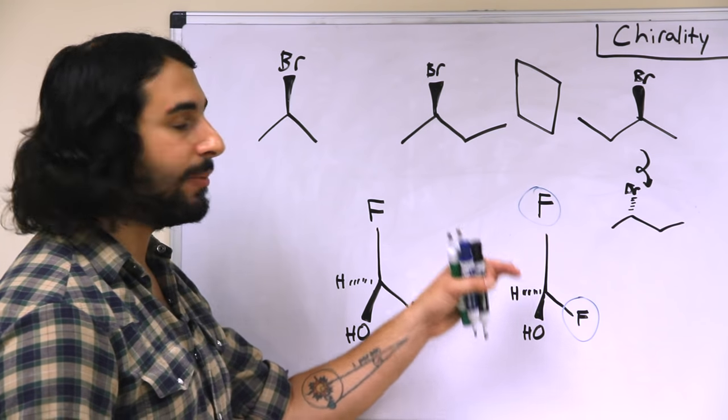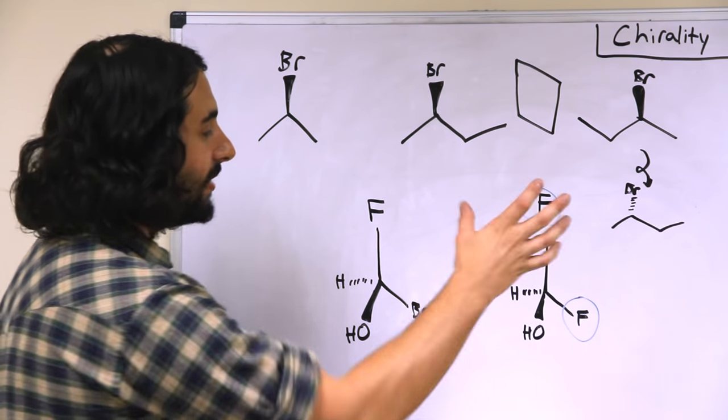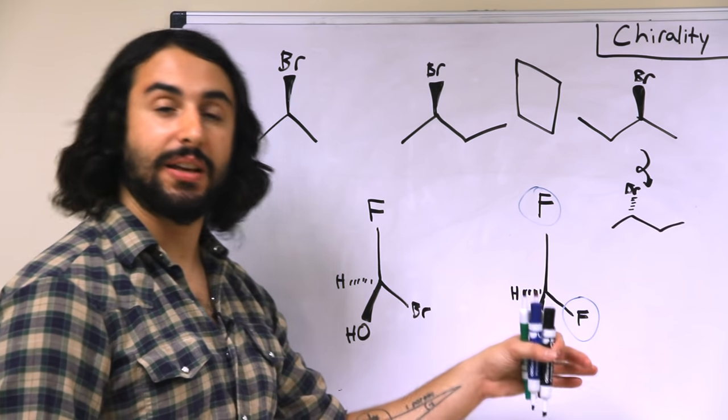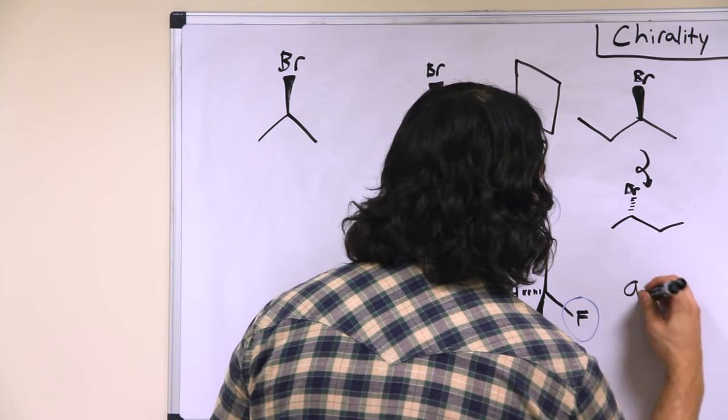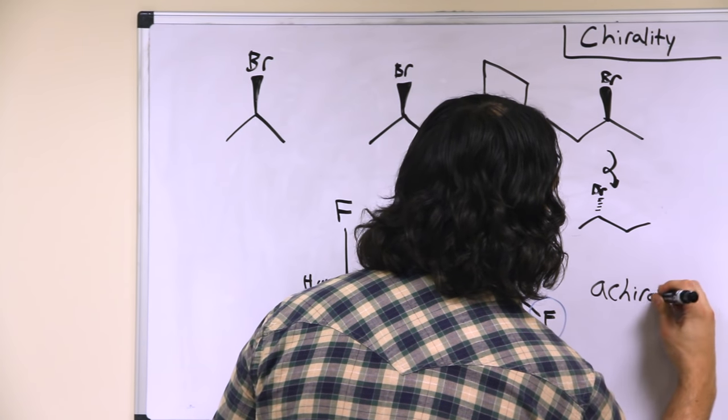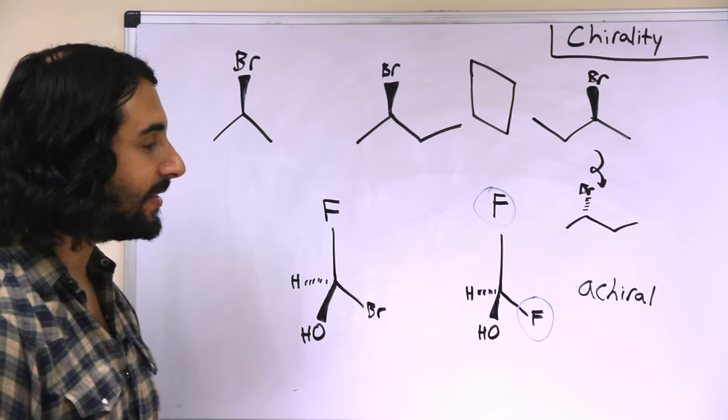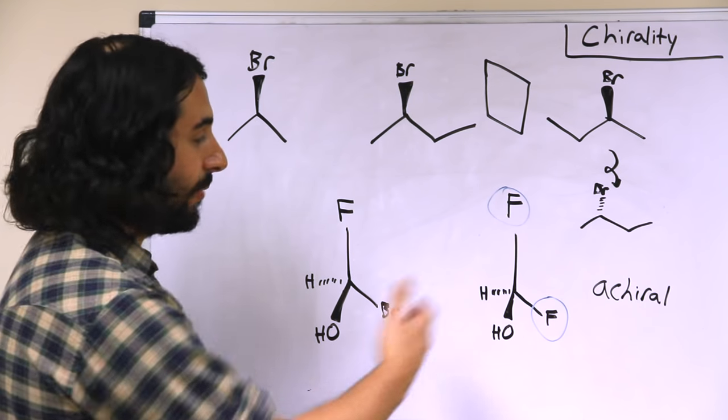However, this one over here, having two identical fluorine atoms, if you drew the mirror image of this molecule, there is a way that you could rotate it so as to make it flawlessly superposable. Therefore, this cannot be chiral. This is achiral. A meaning a prefix that implies not. So this is not chiral. It does not have a mirror image that is distinctly different from the original.